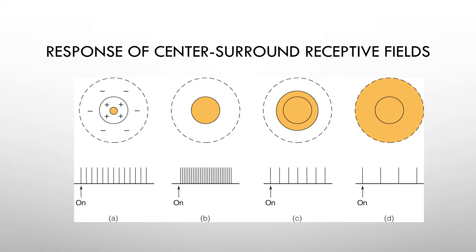Looking at center-surround receptive field responses: starting with a very small ball of light in the center (A), we see a faster firing rate than spontaneous activity. If we make that ball of light larger so it fills up the excitatory space (B), the firing rate gets even faster — we're responding to a more intense stimulus. If the light grows larger and starts to hit the inhibitory surround (C), the firing rate gets a little slower. And as we fill up that inhibitory space (D), we push the neuron back down toward its spontaneous rate, maybe even slightly below it.